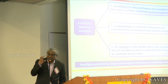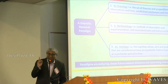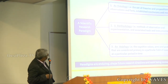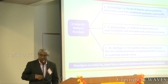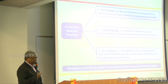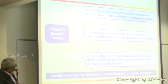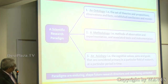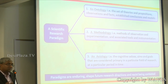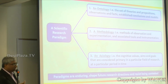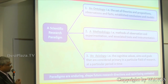I'm going to capture about 40 pages of written material in one slide. A scientific paradigm consists of three things. First, an ontology — the set of theories and propositions, observations and facts, established conclusions and models — which gives rise to a certain language structure to talk about a certain domain.